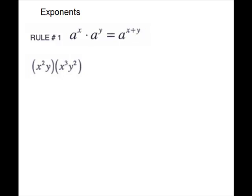For our first example, notice this entire problem is a multiplication — everything inside is multiplication. Because of the associative law of multiplication, you are allowed to rearrange this if you would like. So we can pull the pieces that look alike, so the x's can go together and the y's. Then we will see that we just have two little problems of this rule. For our x's, we have like bases, so we will keep the base and add the exponents.